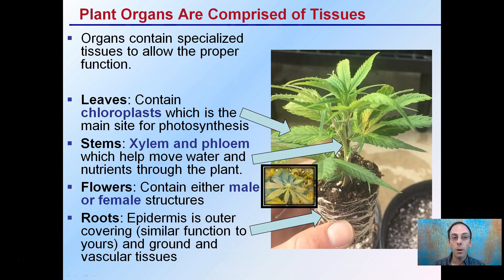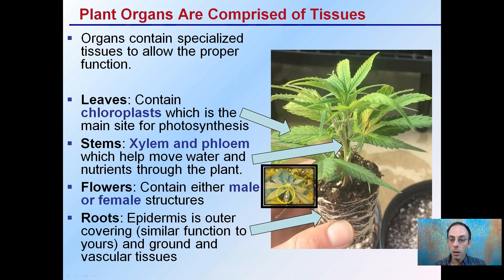The organs contain specialized tissues that allow for proper function. The leaves contain chloroplasts, which is the main site for the photosynthetic process. The stems contain xylem and phloem, which help move water and nutrients through the plant. Flowers contain either male or female structures — this plant is too young to tell, but here we can see a female structure. Roots have an epidermis, the outer covering, which offers protection similar to ours.